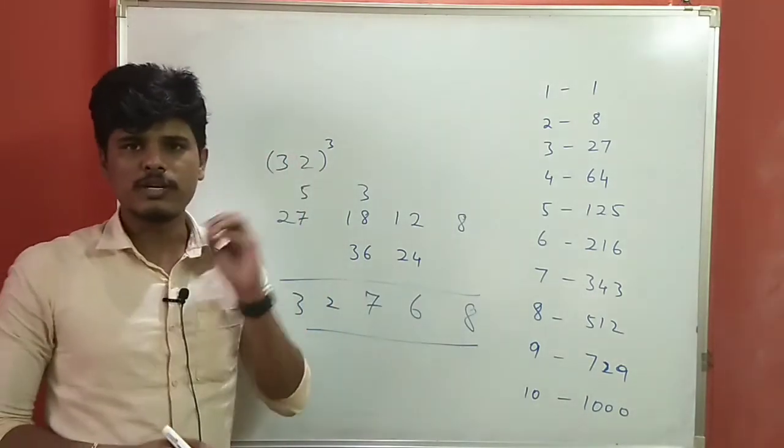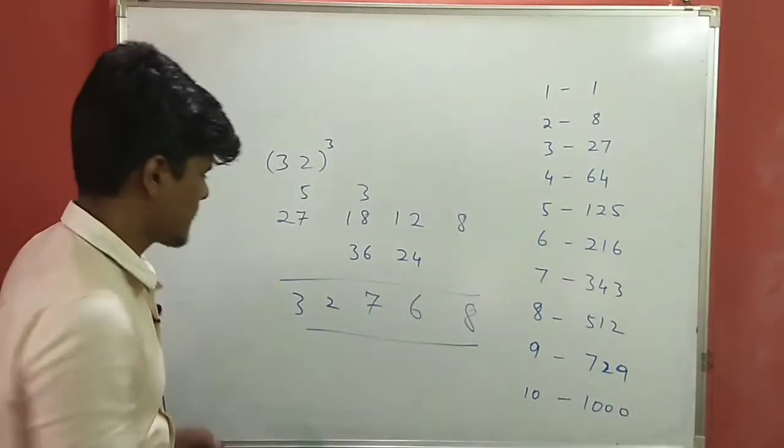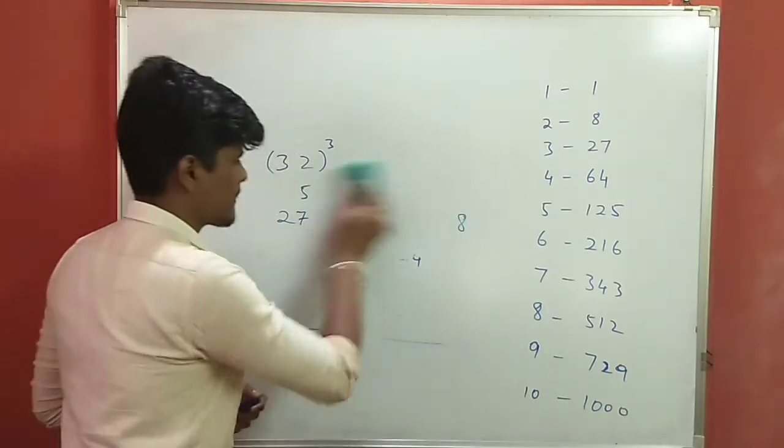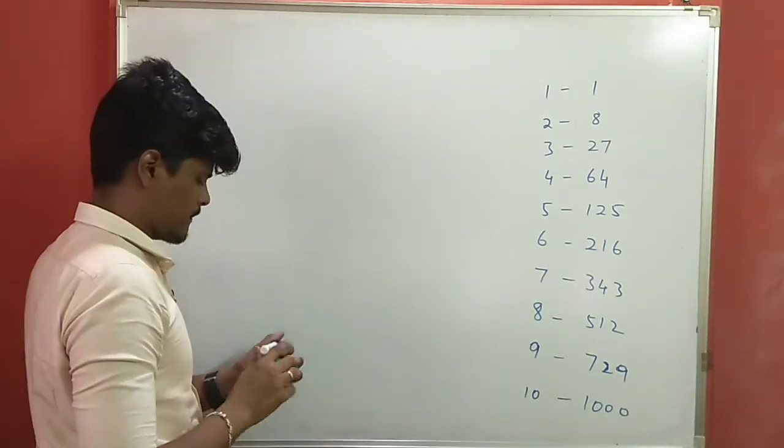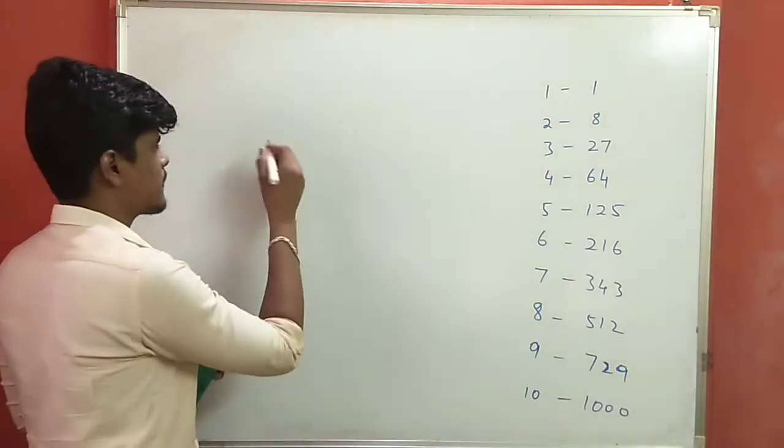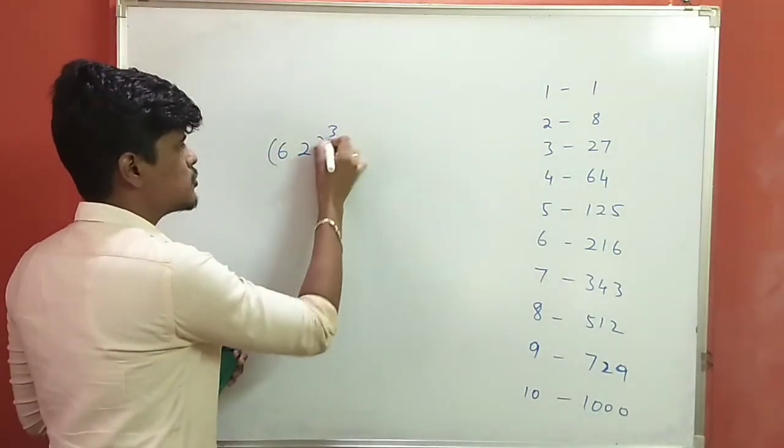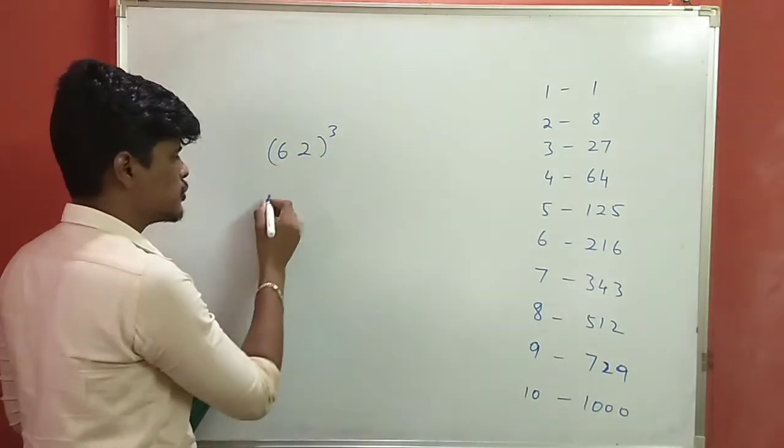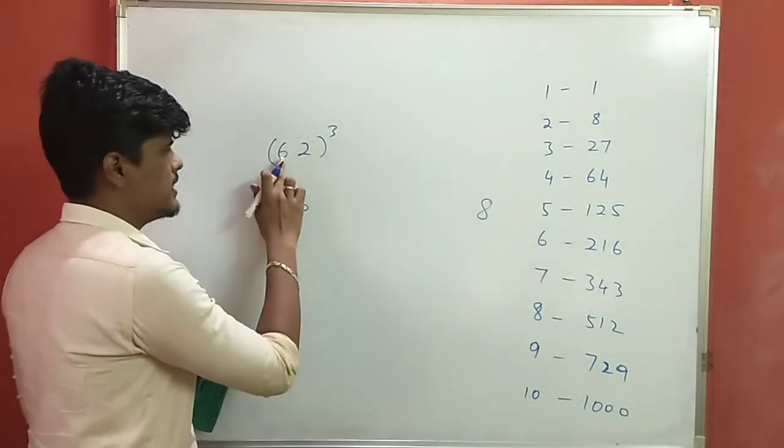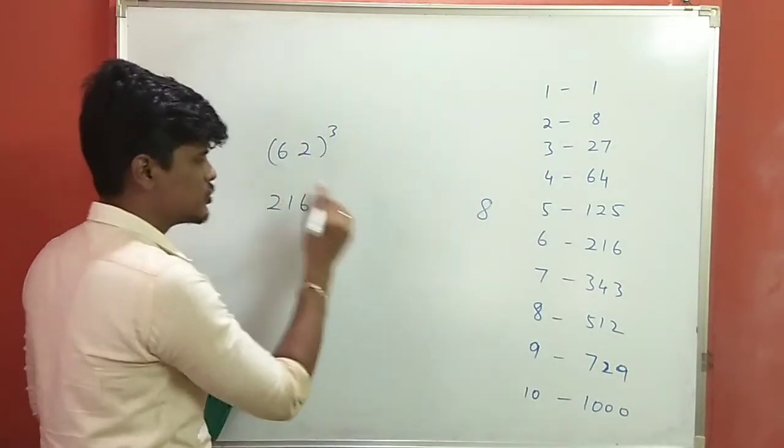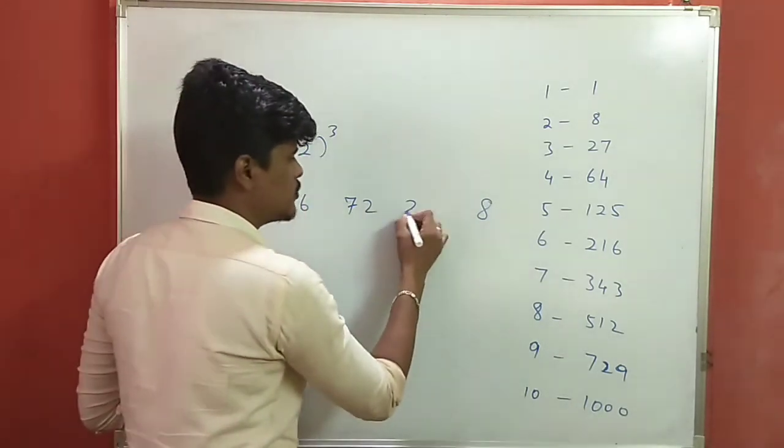Here is another example. 62 cube. 6 to the cube is 216, 2 to the cube is 8. Let's move on a little bit, 6 square is 36 into 2 is 72.